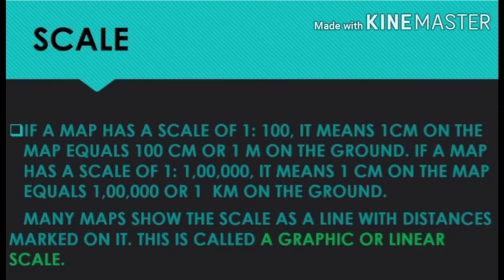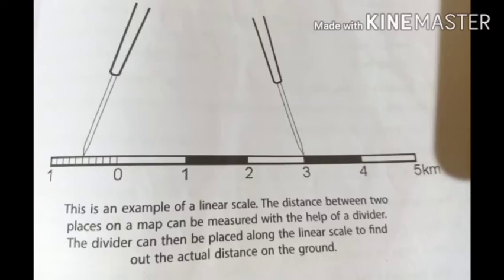Many maps show the scale as a line with distances marked on it, called a graphic or linear scale. The distance between two places on a map can be measured with a divider, which can be placed along the linear scale to find the actual distance on the ground.